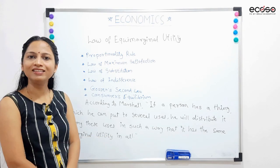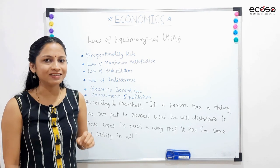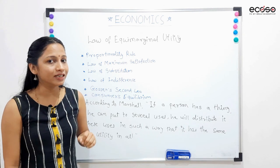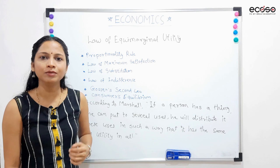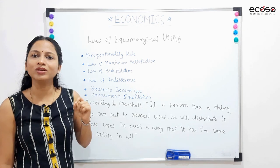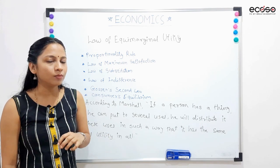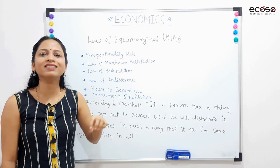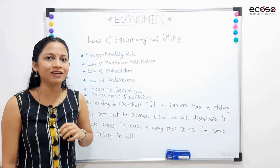Now, we will see how Marshall has explained it. According to Marshall, if a person has a thing which he can put to several uses, he will distribute it among these uses in such a way as to get the maximum satisfaction. Iska matlab hai, kisi bhi person ke paas agar koi cheez hai — income consider karte hai — toh woh apni income alag-alag use mein is tarah se distribute karega ki usse maximum satisfaction hasil ho.